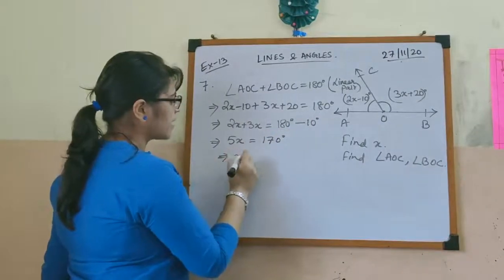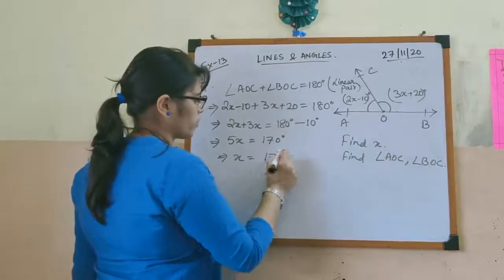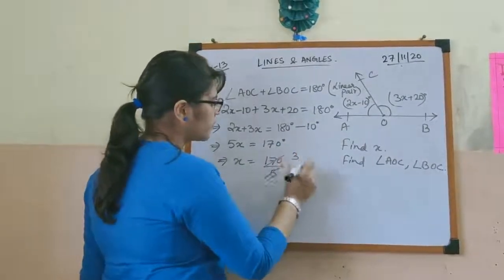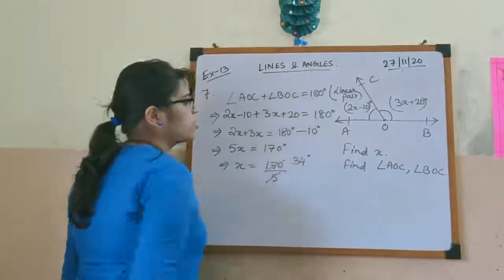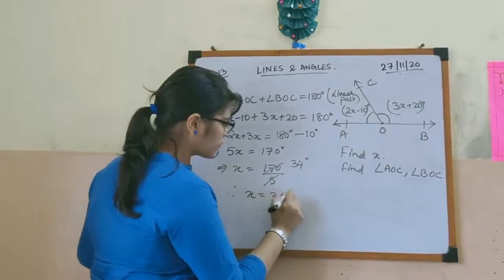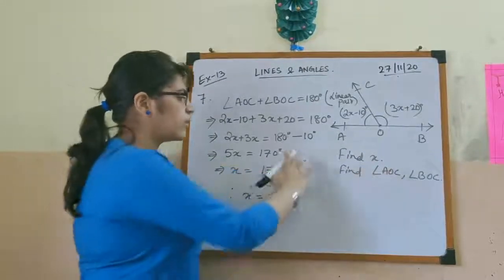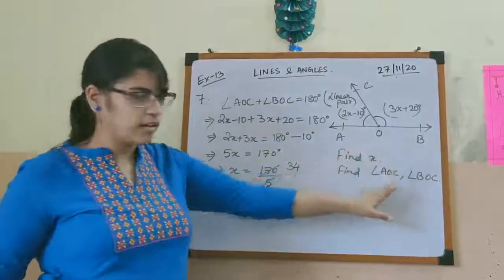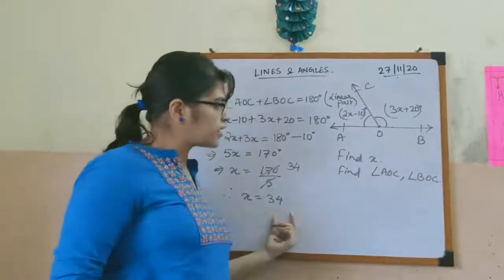So x equals 170 divided by 5. Dividing gives x equals 34. Note that x is not an angle value itself, so we do not write the degree symbol. Therefore x equals 34.